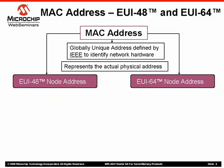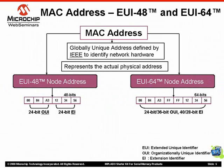The IEEE has two MAC address standards: the 48-bit EUI-48 and the 64-bit EUI-64 standard, which go into different applications as we will see later in this web seminar. Both of these node addresses consist of two parts: a unique OUI, or organizational unique identifier issued by the IEEE, and a unique EI, or extension identifier.